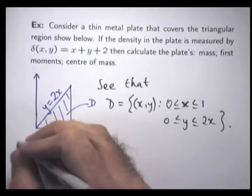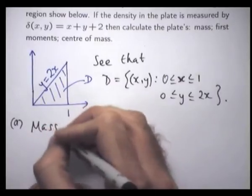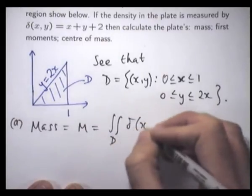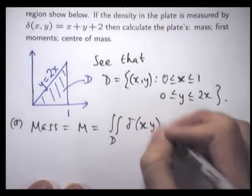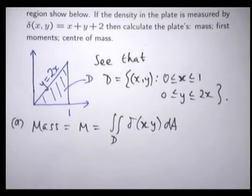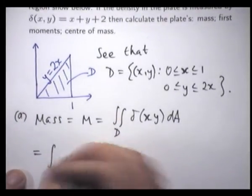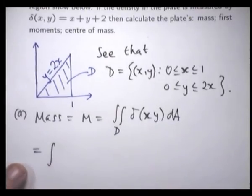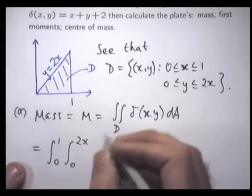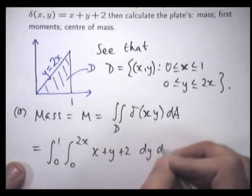Let's work out the mass. By definition, the mass m is just the double integral of the density function over D. So now it just comes down to writing it out as a specific integral: the integral from 0 to 1, inner integral from 0 to 2x, of (x + y + 2) dy dx.